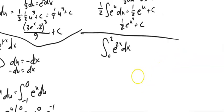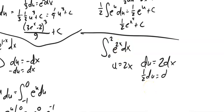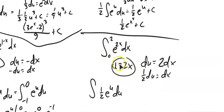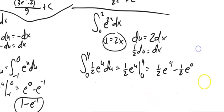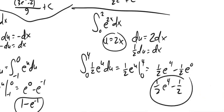One more substitution. I've got e to the 2x, so I'm going to let u equal 2x. The derivative then would be 2 dx, but I just have a dx, so I'm going to cut that in half to make it match. I've got 1/2 e to the u du. I'm going to change the bounds right now: when x is 0, u is 2 times 0 equals 0; when x is 4, u is 2 times 4 equals 8. So I've got 1/2 e to the u running from 0 to 8, giving 1/2 e to the 8th minus 1/2 e to the 0. E to the 0 is 1, so I've got 1/2 e to the 8th minus 1/2. I can leave it that way or get a decimal approximation.